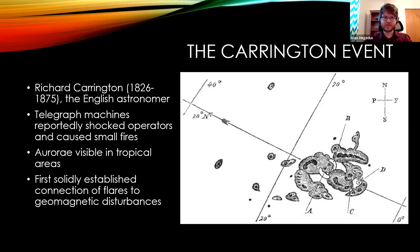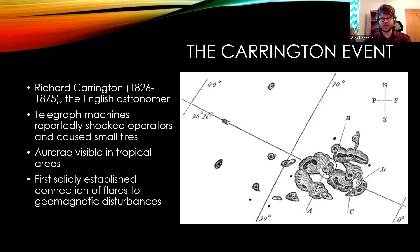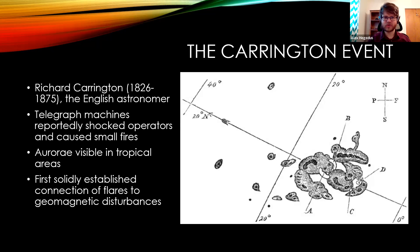Aurora were so intense they were visible in areas that almost never saw them, making their way as far south as Hawaii and other tropical areas. This really solidified humanity's understanding of the connection between solar flares and geomagnetic disturbances. We had seen aurora before and had been looking at sunspots for a while, but this was the kicker — giving us that connection between observing big flares and big structures on the solar surface, and understanding that these can actually have major effects here at Earth.